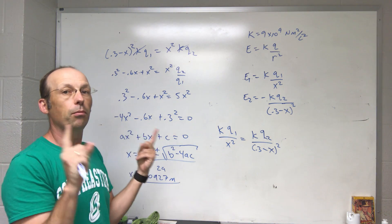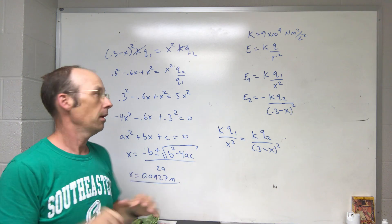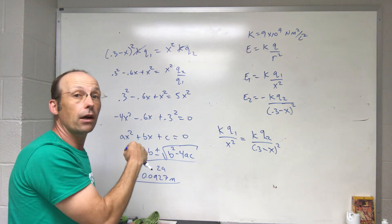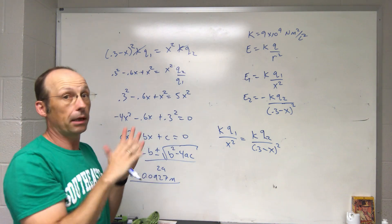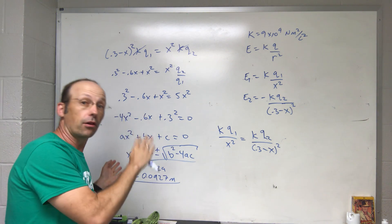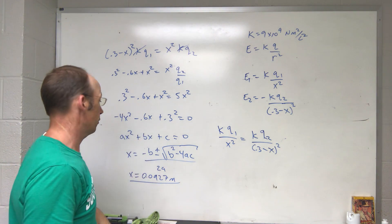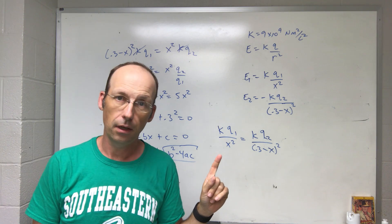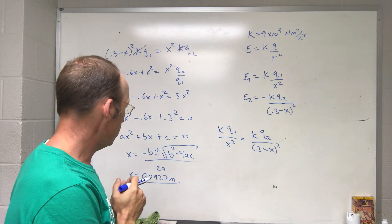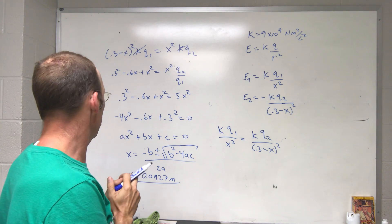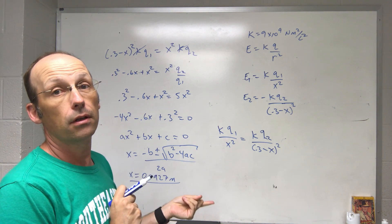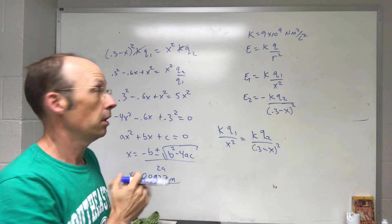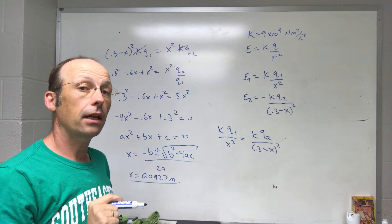One answer is negative, so it doesn't apply. The valid answer is approximately 0.0927 meters, which is between the two charges — as expected. Notice it's closer to the one-nanocoulomb charge, because the five-nanocoulomb charge produces a larger field, so you need to be closer to the weaker charge for cancellation. This problem was only complicated because of the quadratic equation; otherwise, it's straightforward. I'll make another video to show the electric field across all regions using Python.